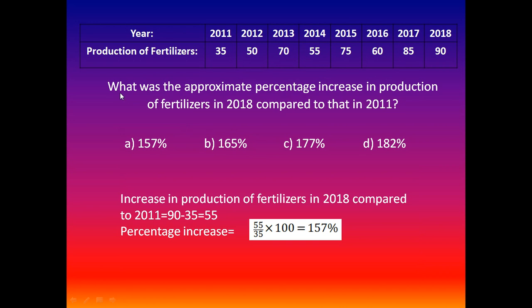The next question is: what was the approximate percentage increase in production of fertilizers in 2018 compared to 2011? Here, 2018 contains 90 tons and 2011 contains 35 tons. The increase in production between 2018 and 2011 equals 90 minus 35, which equals 55 tons.